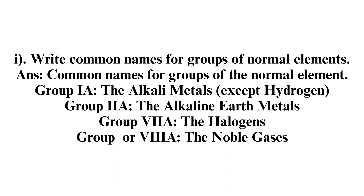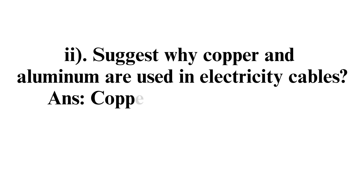Group IA: The Alkali Metals, except Hydrogen. Group 2A: The Alkaline Earth Metals. Group 7A: The Halogens. Group 0 or VIIA: The Noble Gases.